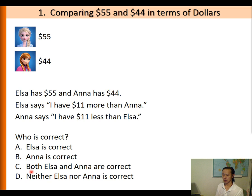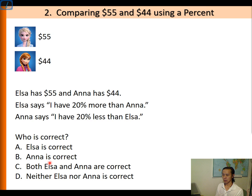$55 is $11 more than $44, and $44 is $11 less than $55. Now let's compare using a percent. This time Elsa says I have 20% more than Anna, and Anna says I have 20% less than Elsa. Who is correct? What do you think?